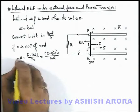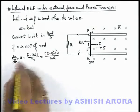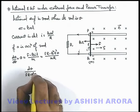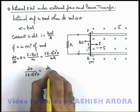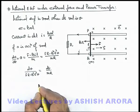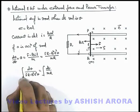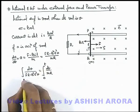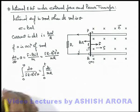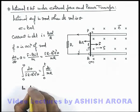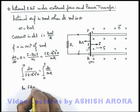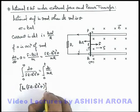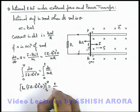We can write acceleration as dv/dt, and separating the variables this becomes dv over (FR minus B²L²v) equals dt over mR. We can integrate this expression to find the velocity of the rod as a function of time, integrating from zero to t with speed from zero to v. On integrating, we get the natural log of (FR minus B²L²v), applying limits from zero to v, equal to t over mR.